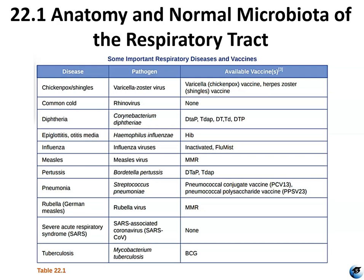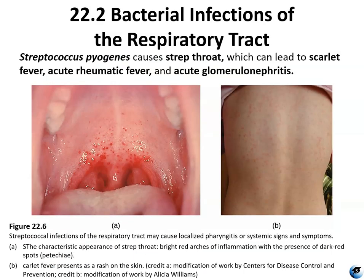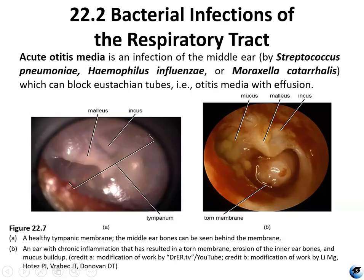Strep throat is caused by Streptococcus pyogenes, which not only causes strep throat but can also cause scarlet fever, acute rheumatic fever, and acute glomerulonephritis. Figure 22.6 shows the bright red arches of localized pharyngitis and strep throat, and the rash that occurs due to scarlet fever. Acute otitis media is an infection of the middle ear usually caused by several bacterial genera: Streptococcus, Hemophilus, or Moraxella.